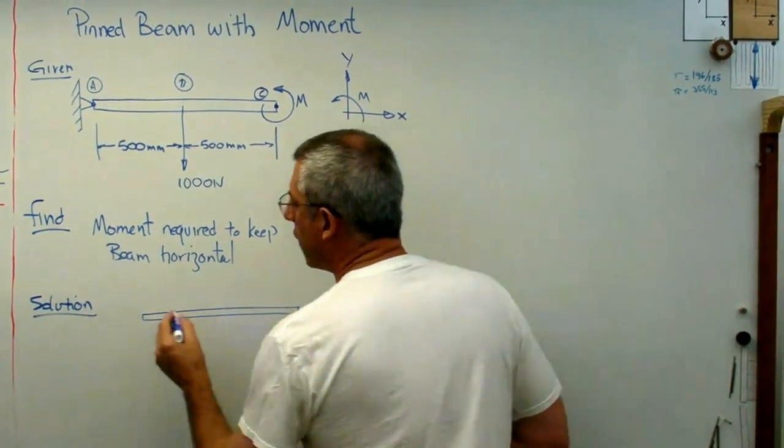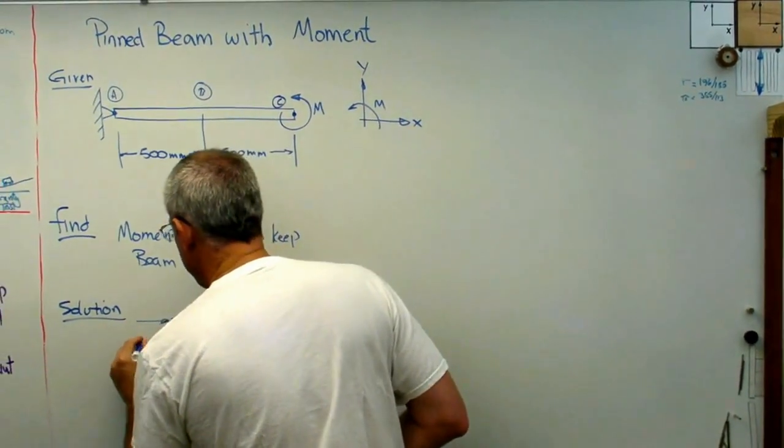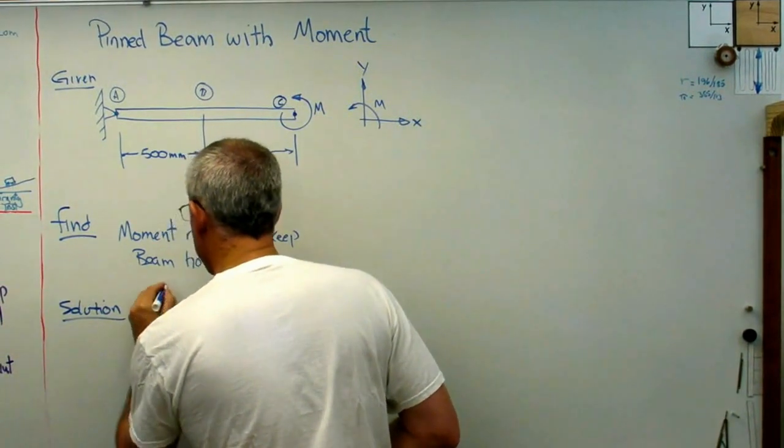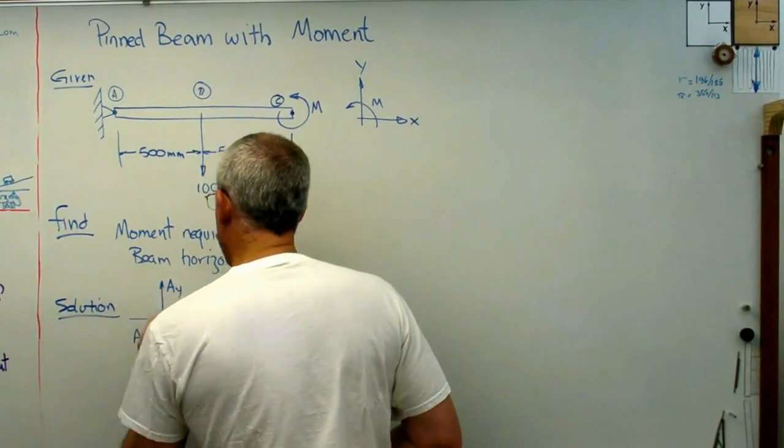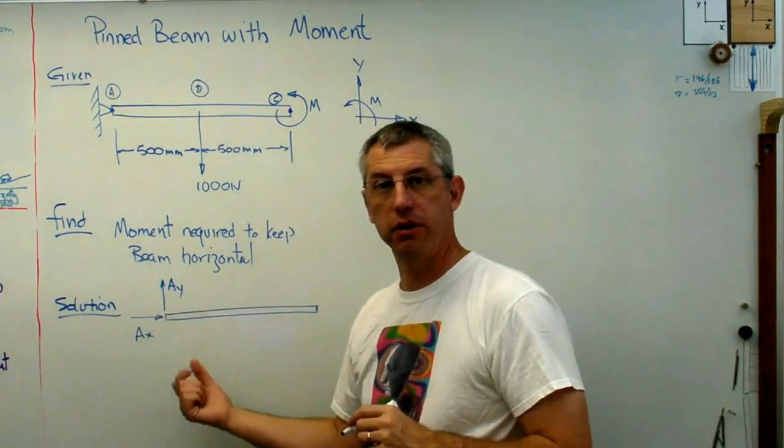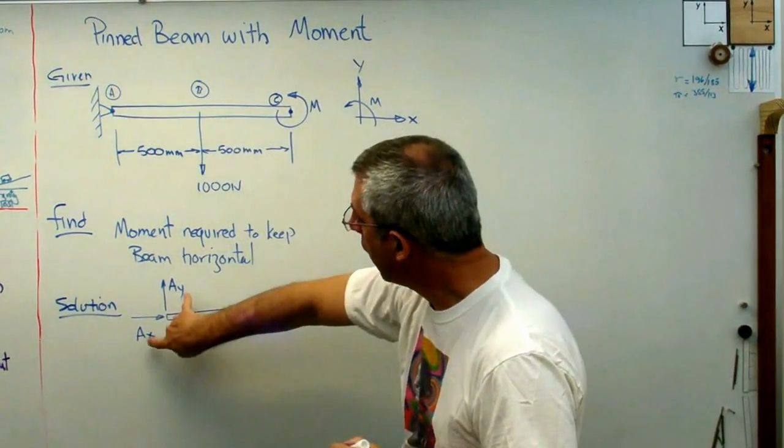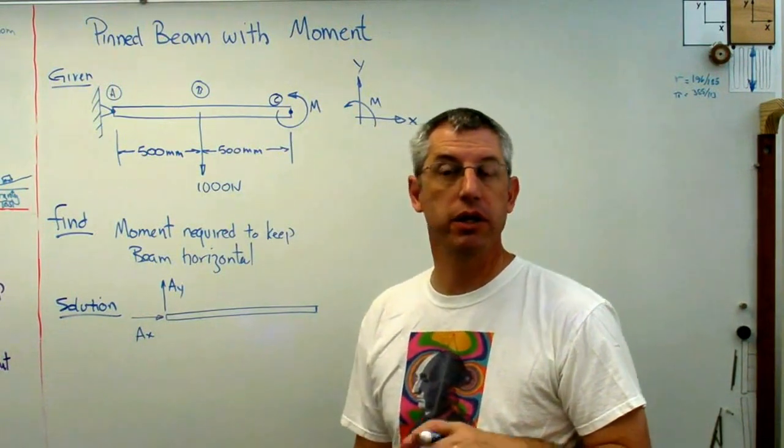So what do we have here? We've got a force, possibly. I'll call that AX, and another one here I'll call AY. A in the X direction, A in the Y direction. I've assumed directions. I just assumed the positive directions.